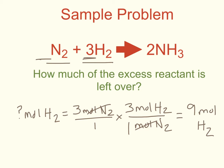We were given 11 moles of hydrogen gas, so to find how many moles of hydrogen gas are left over, I take the 11 that I was provided and subtract the 9 that I'm going to use, and I find that I have 2 moles of hydrogen gas left over at the end of the reaction.